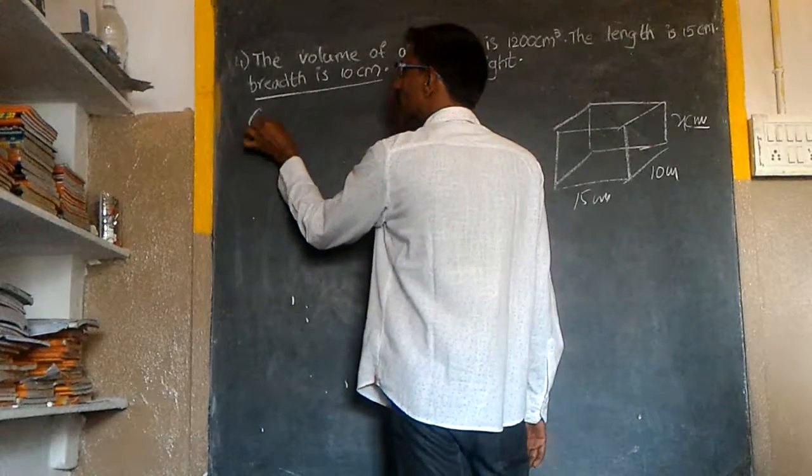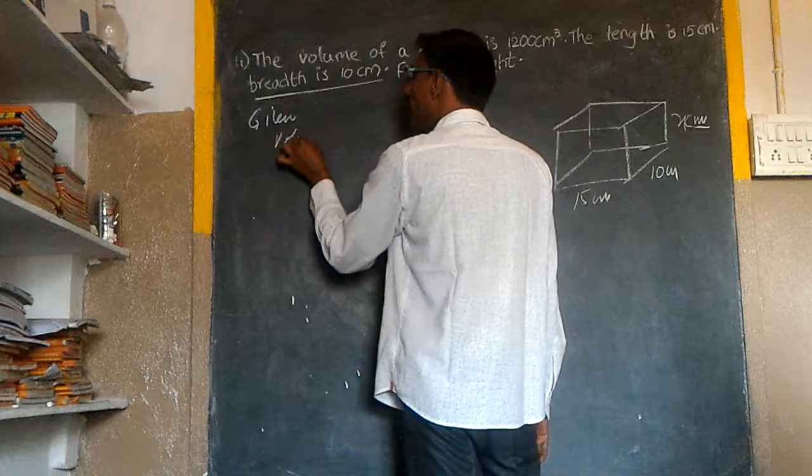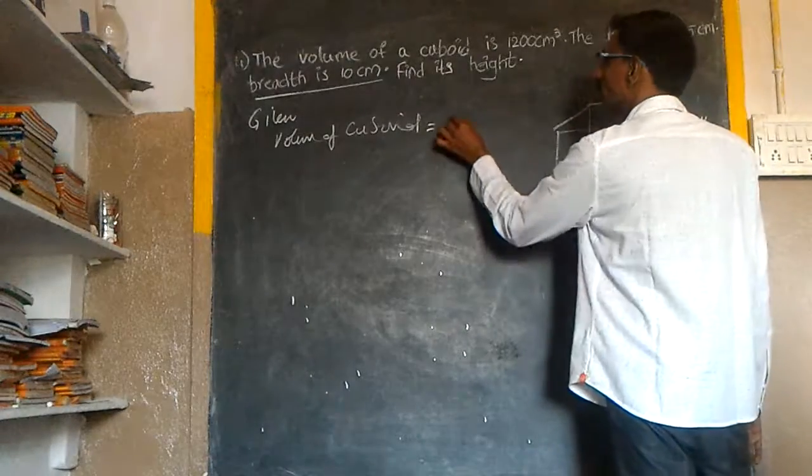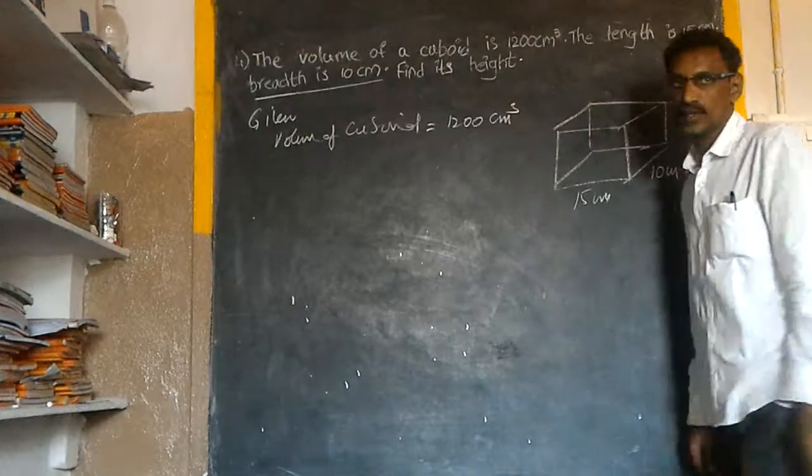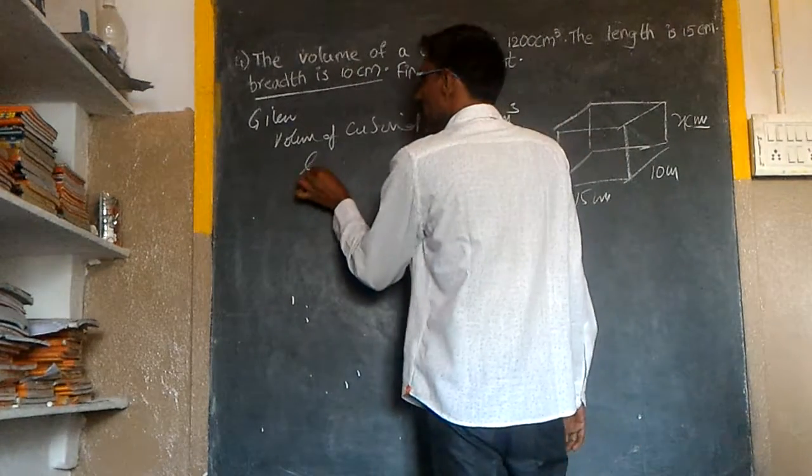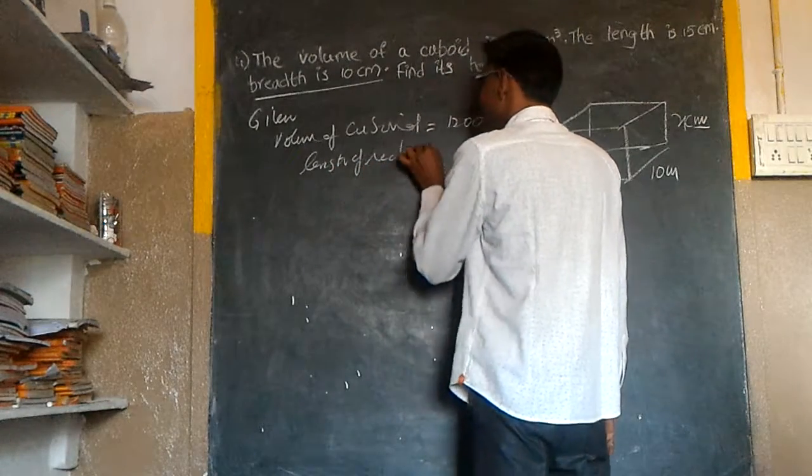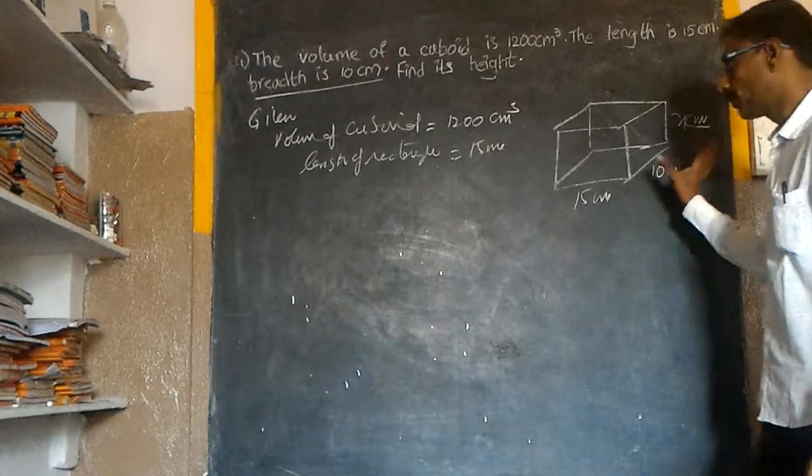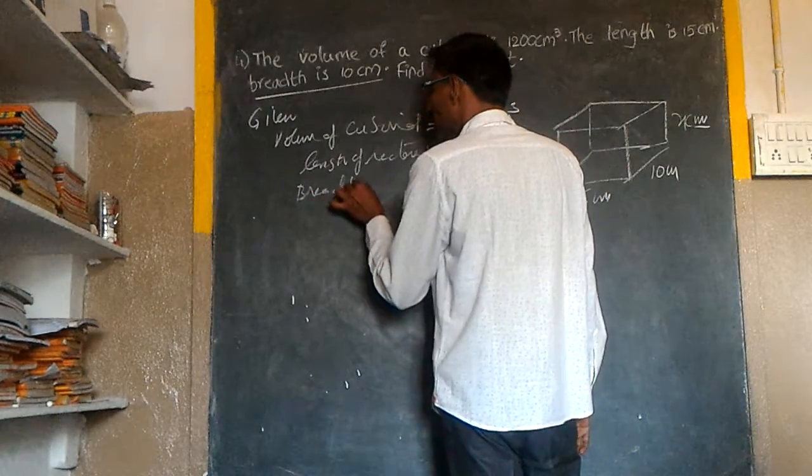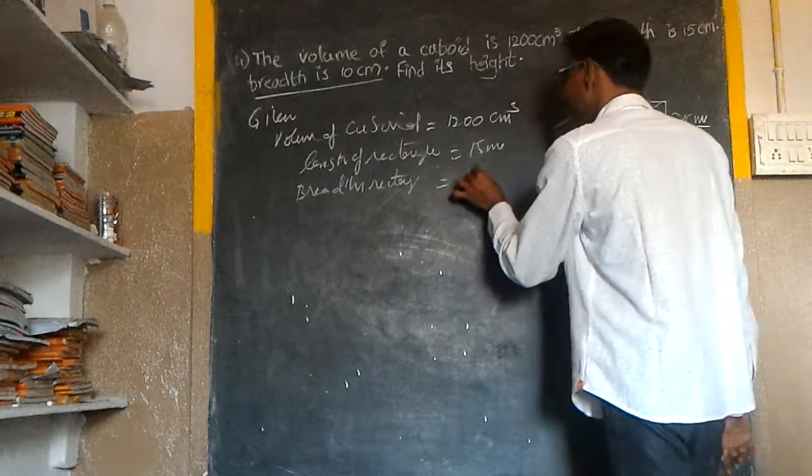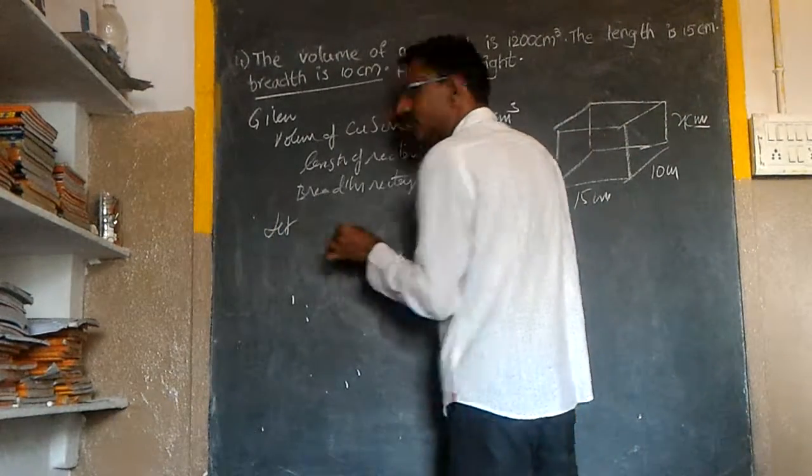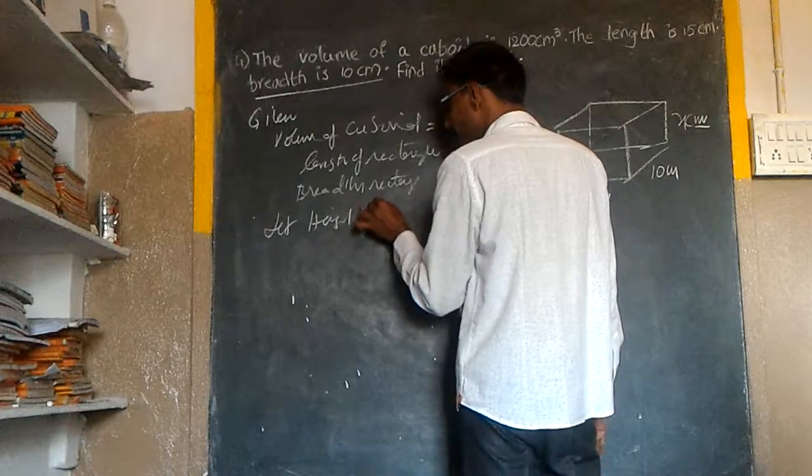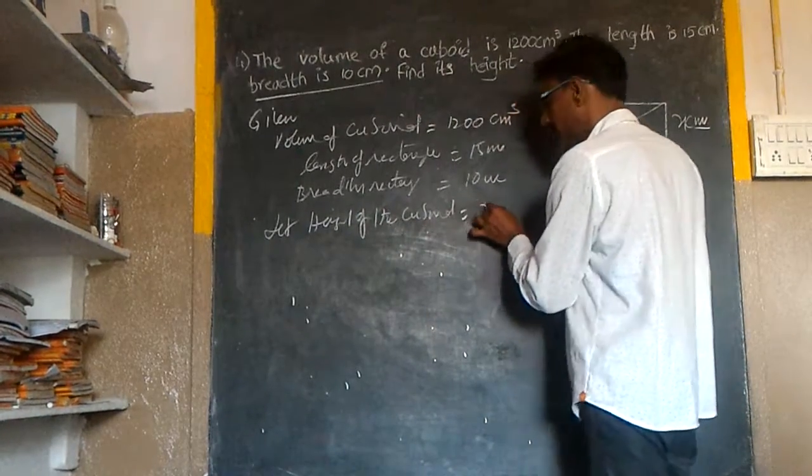Here we have given: Volume of cuboid is equal to 1200 cm³. Length is equal to 15 cm. Breadth is equal to 10 cm. Height of the cuboid is equal to X cm.